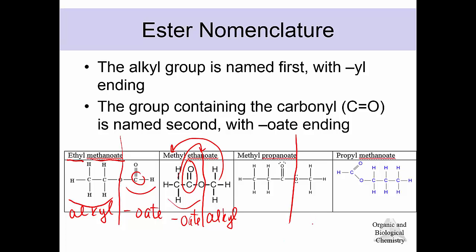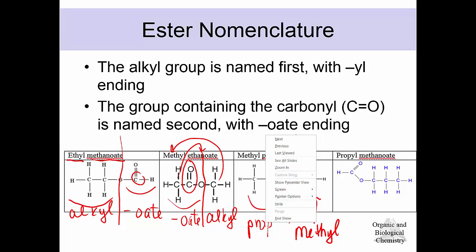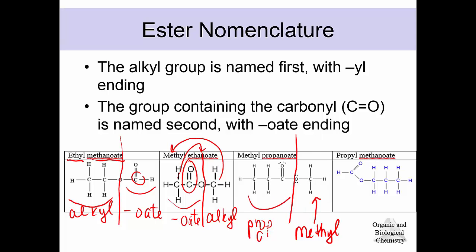Split this one in half: the one-carbon group is methyl, and the three-carbon side is propanoate, so this becomes methyl propanoate. Over here, the alkyl group has three carbons — propyl — and one carbon on the other side gives methanoate, so it's propyl methanoate. We never need the numbering system when naming esters because the names themselves tell us where that carbonyl group is and how many carbons are on either side of it.